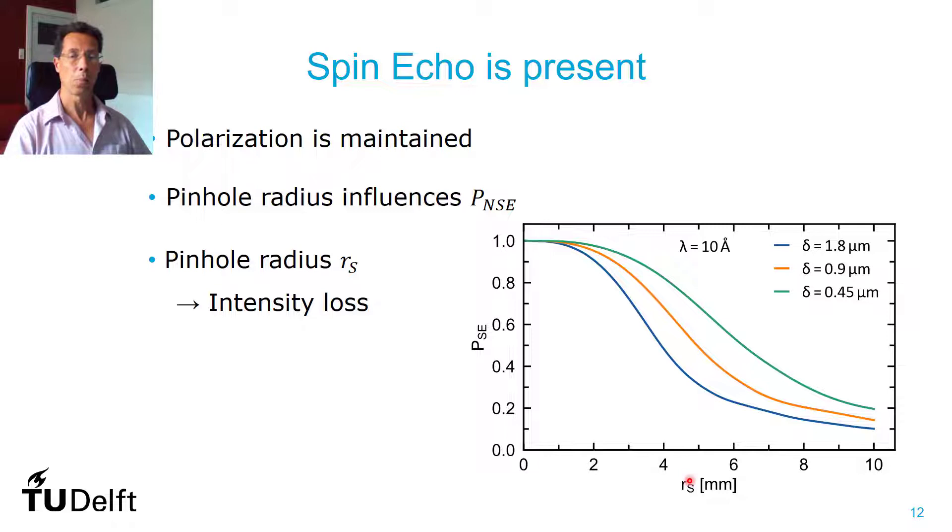If your pinhole is very small, less than one millimeter, the radius, then you get a perfect spin echo. And if you make it larger, the amplitude will start to decrease. And on the one hand, you would like to have high echo, so you want to have a small pinhole. If you do that, then you lose intensity. So this is not the complete picture.